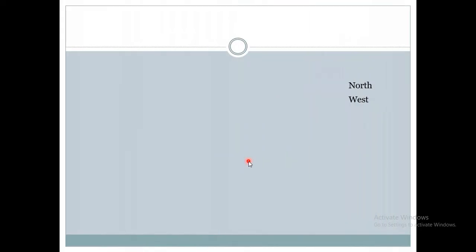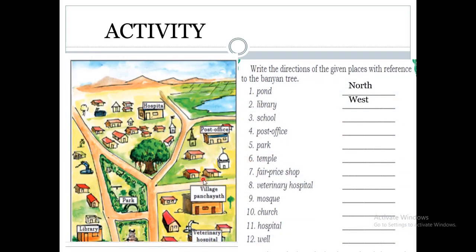Here in this slide you can see the activity given in your reader, page number 109. There are four directions, and using those four directions you are going to write the direction. In the center of the picture there is a banyan tree. You have to write the directions of the given places with reference to the banyan tree, as shown on page number 110.